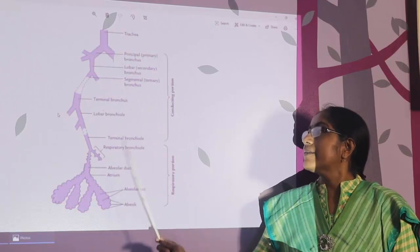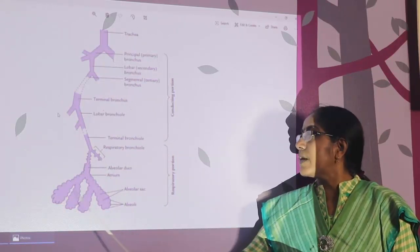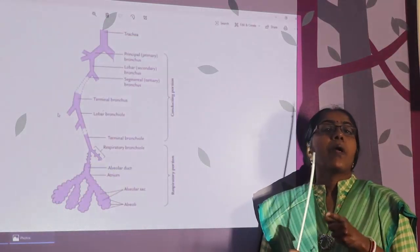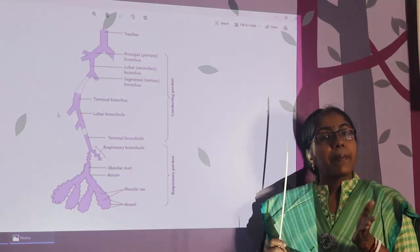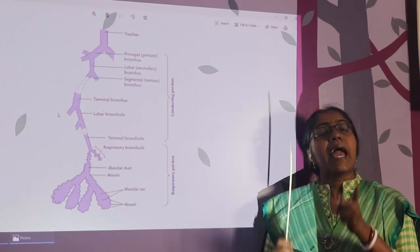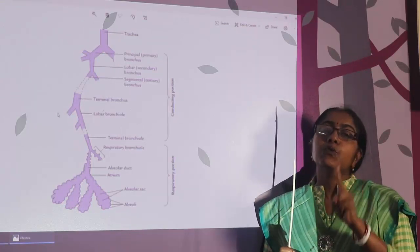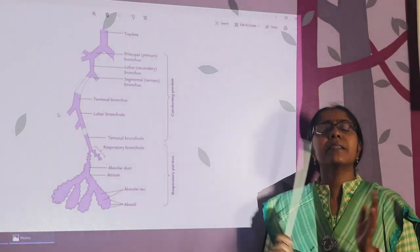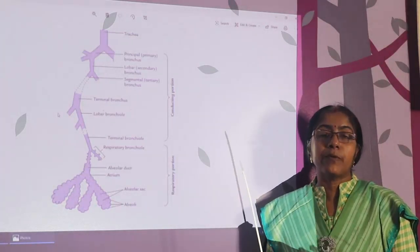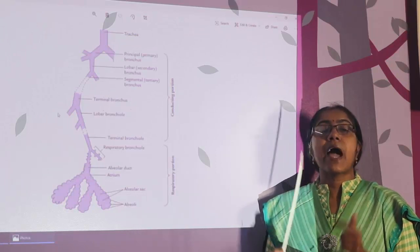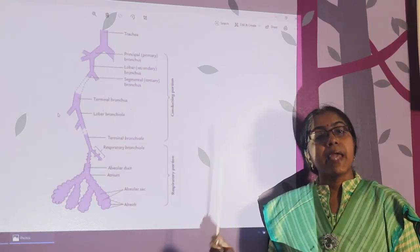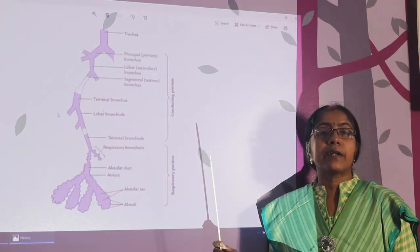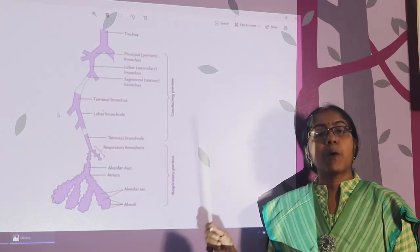Bronchial arteries supply the conducting portion and pulmonary arteries supply the respiratory portion. The right lung is supplied by one bronchial artery and the left lung is supplied by two bronchial arteries. Bronchial arteries are branches of the descending thoracic aorta. Sometimes the right bronchial artery may arise from the right third posterior intercostal artery or from one of the left bronchial arteries.